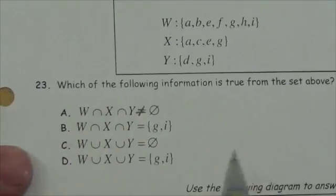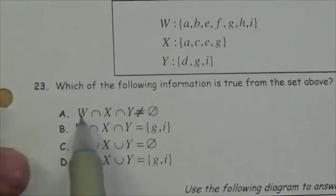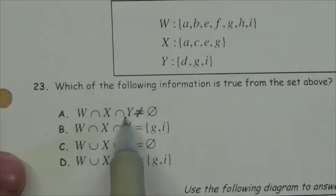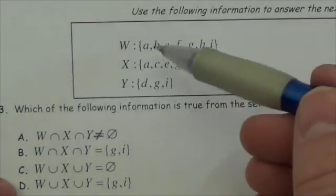So we're going to look at which of the following is true here. Is it true that the intersection between W, X, and Y is not the empty set? Okay, well, let's see. What's here?